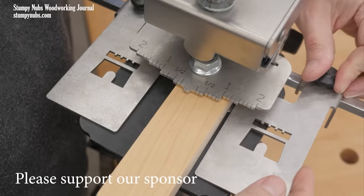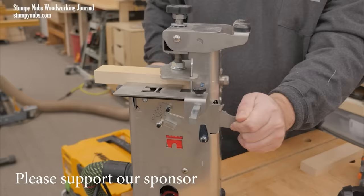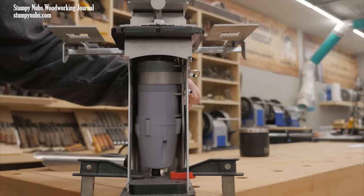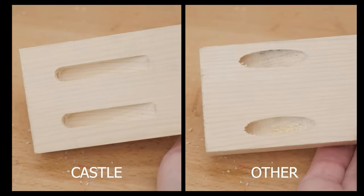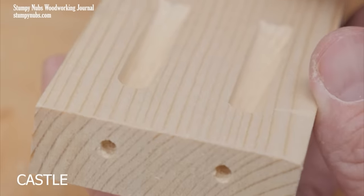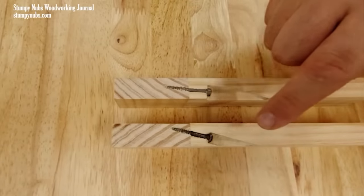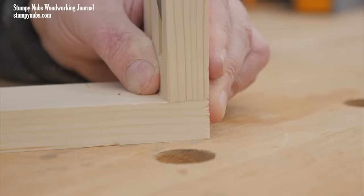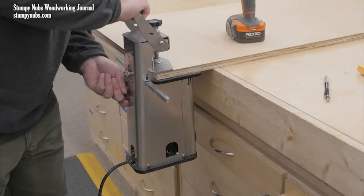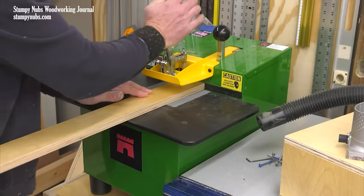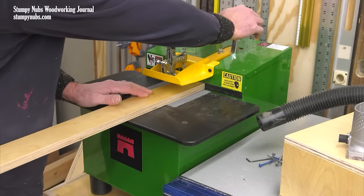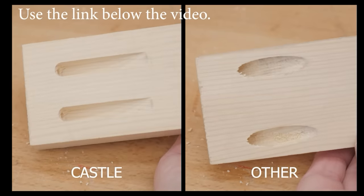Castle doesn't just make pocket hole jigs, they make pocket hole joinery machines. The internal router cuts a cleaner pocket than any drill bit can, with no tear out and a crisp exit. The steeper angle centers the screw for a stronger joint and reduces component drift during assembly. Castle machines are top quality, built to last, and flat out perform. Visit their website at the link below and see the difference for yourself.